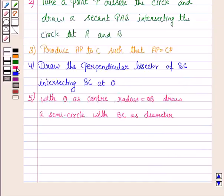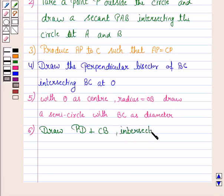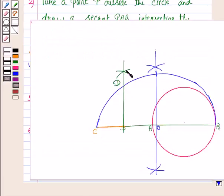The next step is, draw PD perpendicular to BC, intersecting the semicircle at D. So PD is perpendicular to BC.